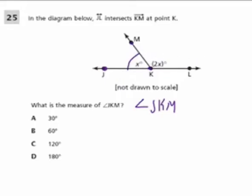So look at angle X and 2X. They're sitting on this line right here. So they're a supplementary pair. They add up to 180 degrees.